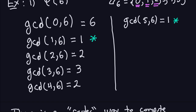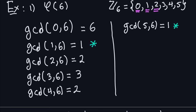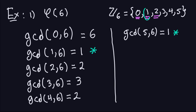So what are the numbers that are relatively prime with 6 in this collection? I have only two numbers: 1 and 5. So phi of 6 is the count of numbers in this collection that are relatively prime with 6, which in this case is only two of them. So phi of 6 equals 2.